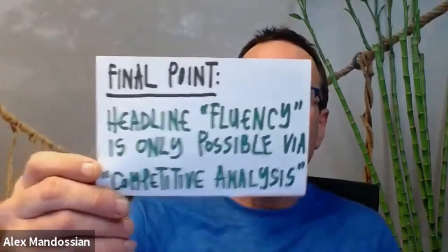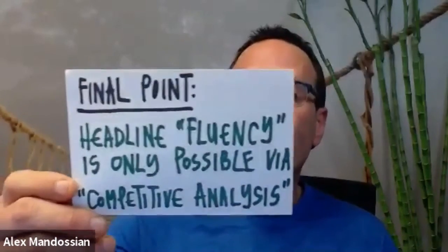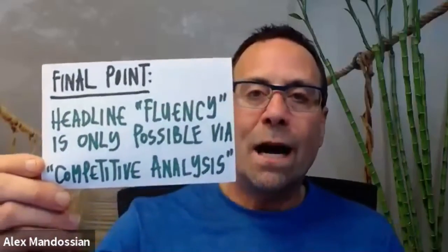Headline fluency — being really good at headlines — is only possible through competitive analysis. The best way to become a good headline writer is to check out others in your industry, see what they're writing, and notice what ads keep coming up again and again. Find what headlines are working and use a derivation of them. Don't try to be original — that's dangerous. Be a competitive analyzer. I'm Alex Mondosian. I hope our paths cross again soon. Good luck with the templates and headlines.